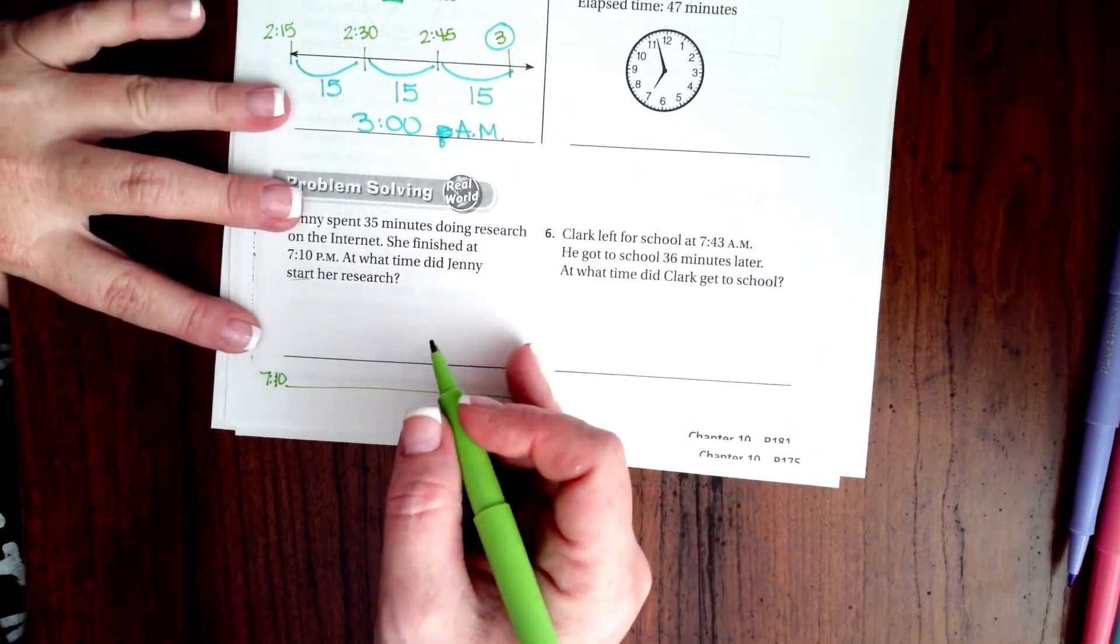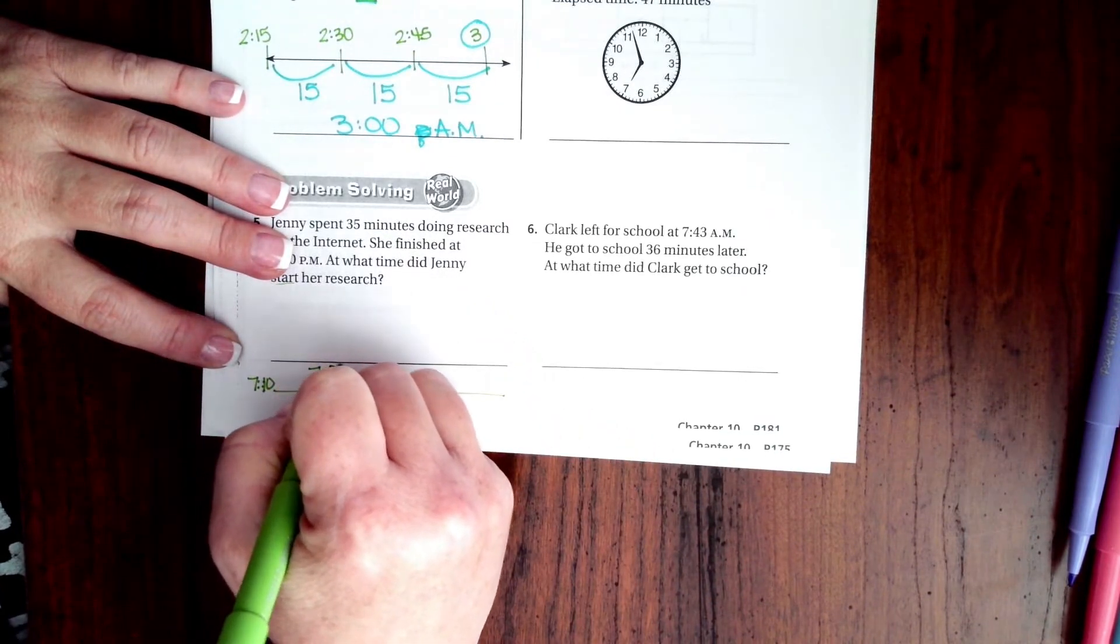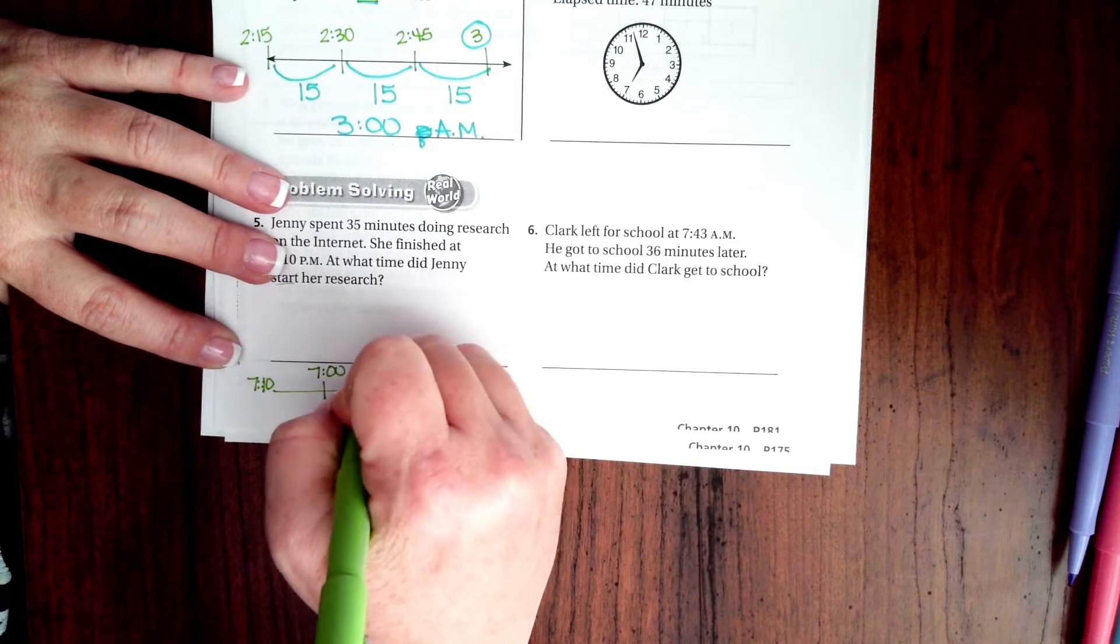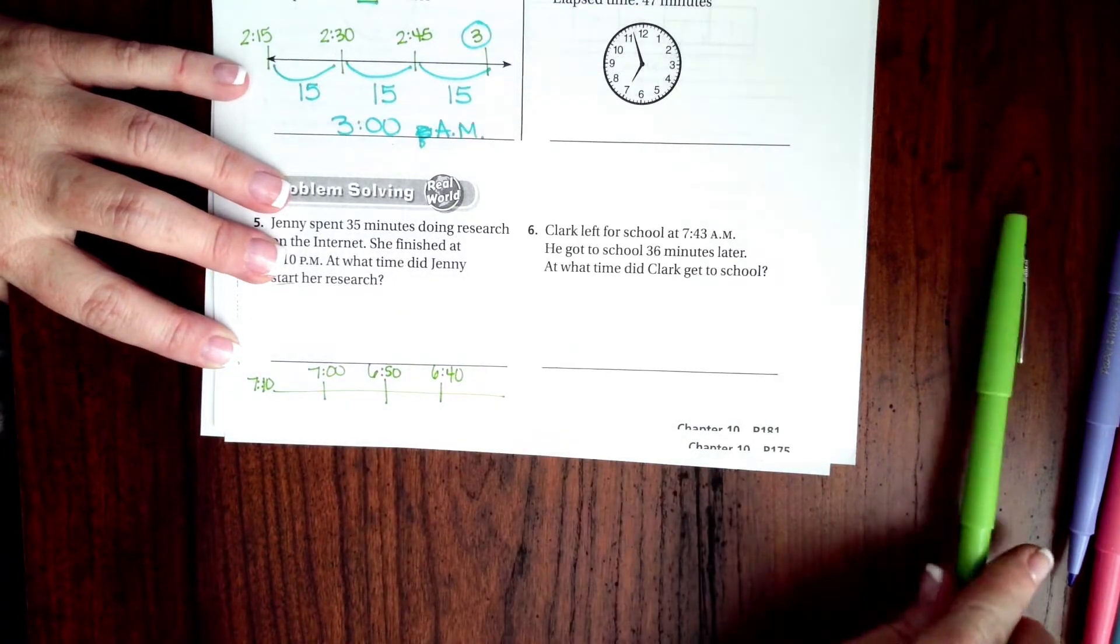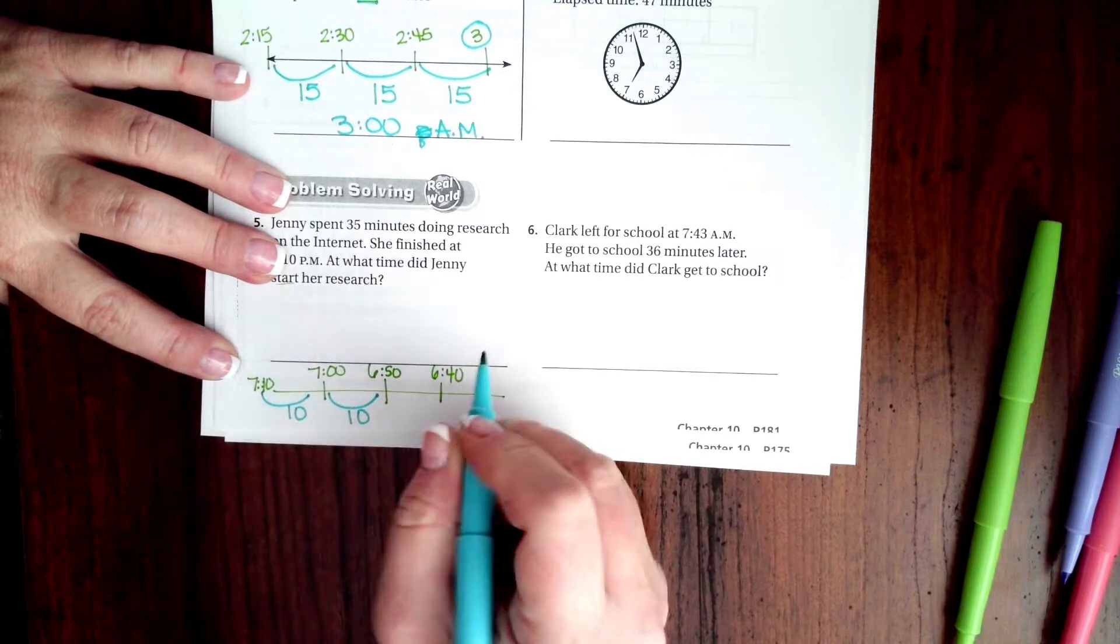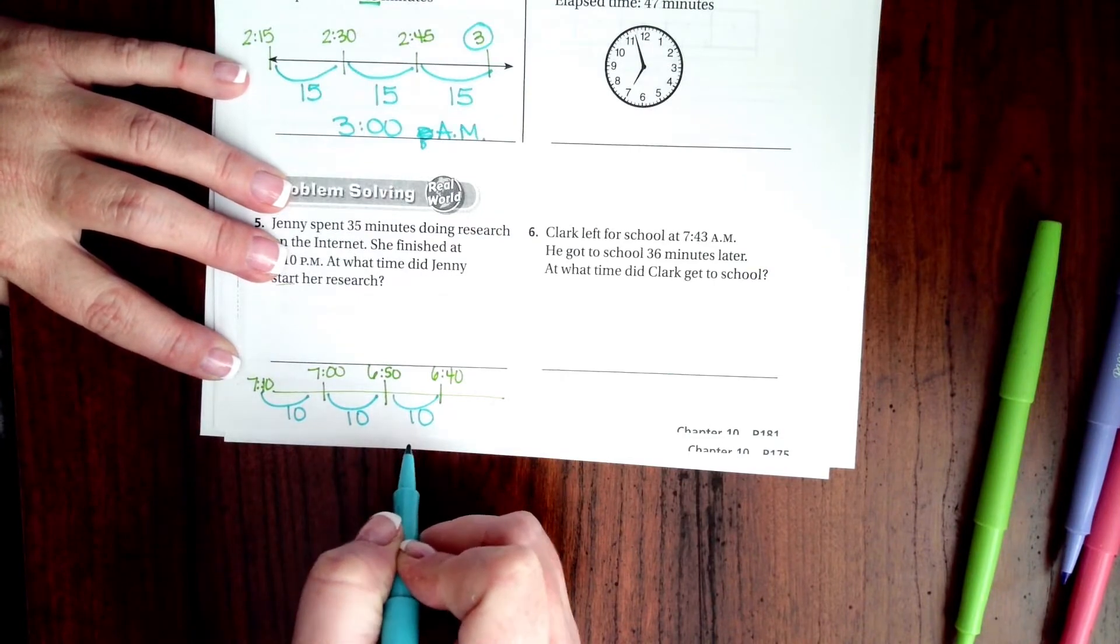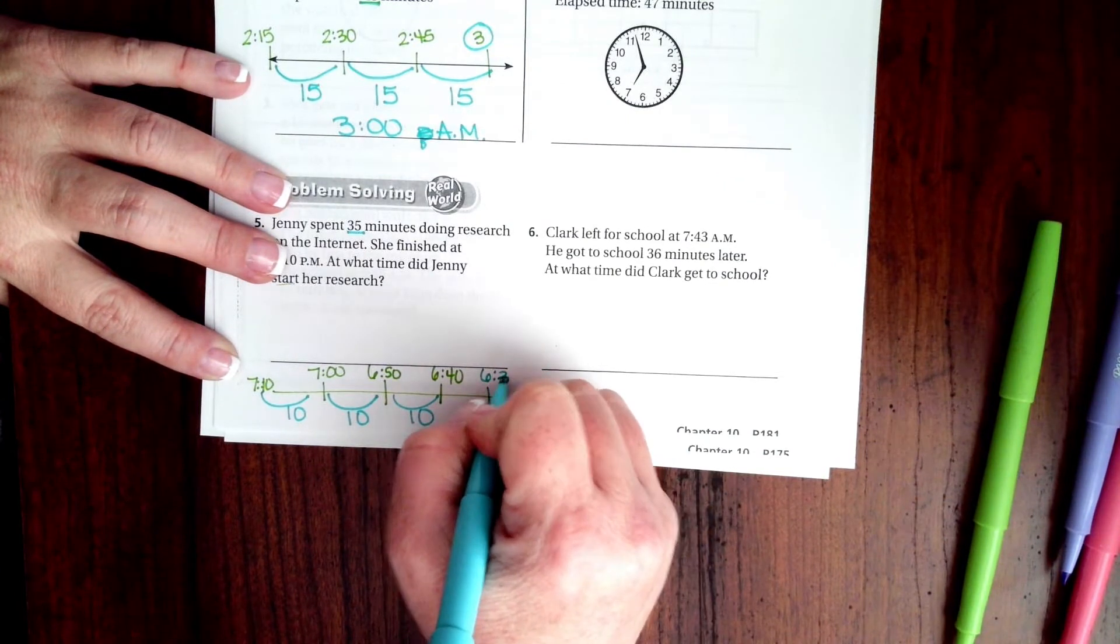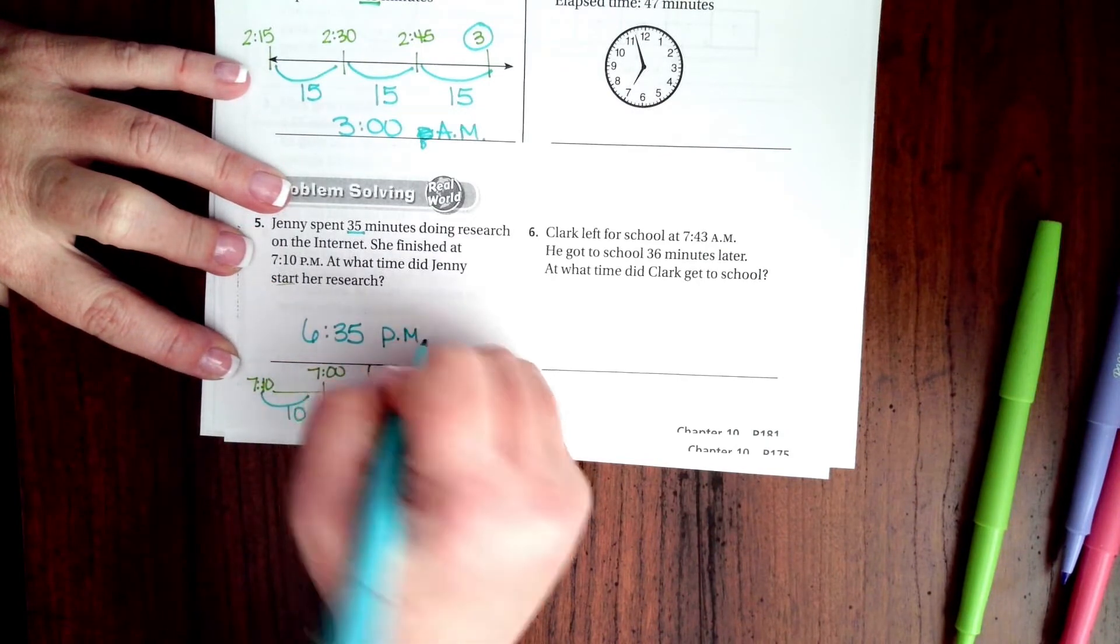We are going to go backwards 35 minutes. So, I'm going to do that in groups of 10 at first. So, if I go backwards, I've got 7 o'clock. That's 10 minutes right there. I need to go back 35 minutes. So, I'm going to go by 10. So, 6:50. Then, 6:40. So, let's see where we're at. From 7:10 to 7, that's 10 minutes. There's another 10 minutes to 6:50. There's another 10 minutes. So, now I have 30 minutes added up here. I only need 35. So, I'm going to take away another 5, which leaves me at 6:35. 6:35 PM.